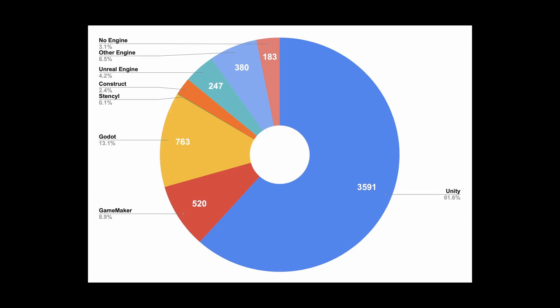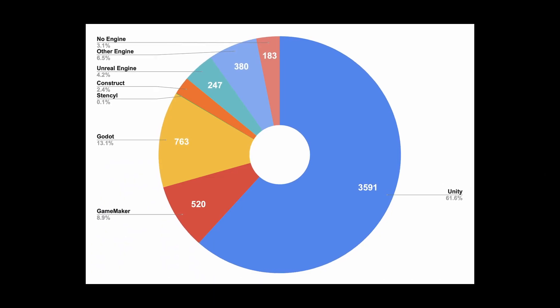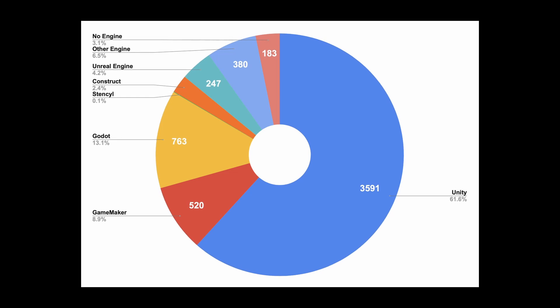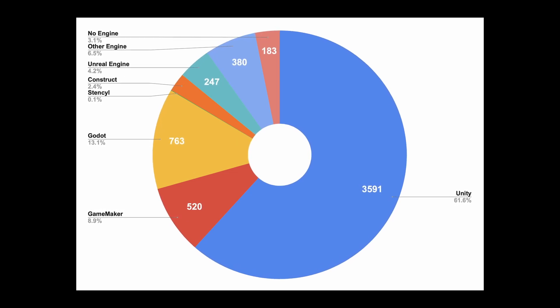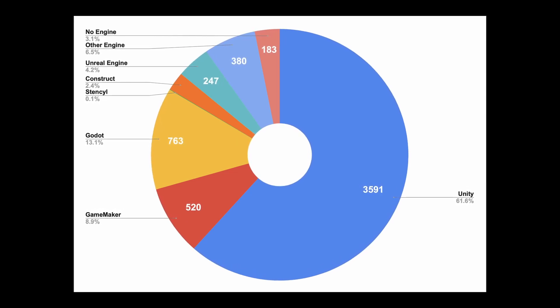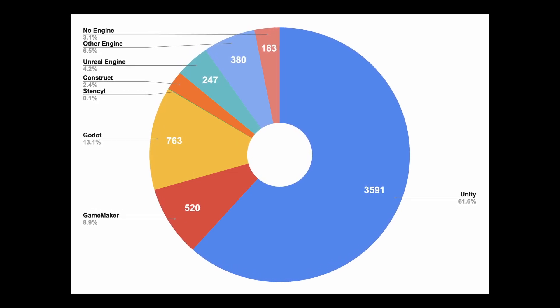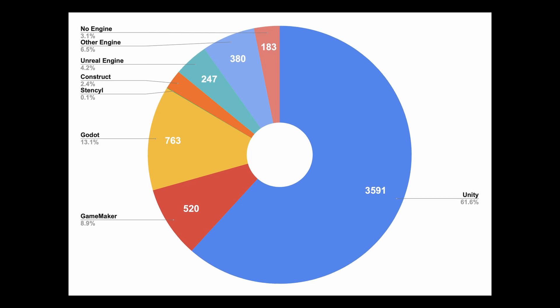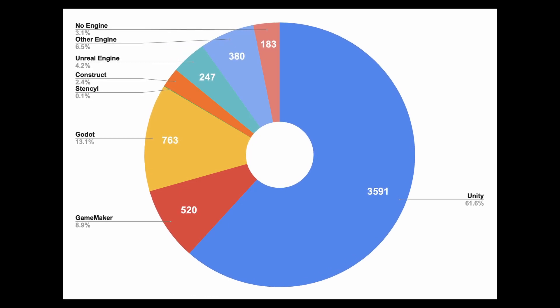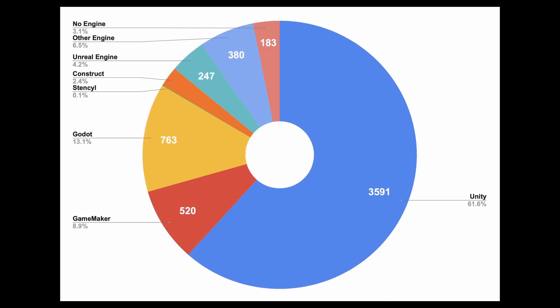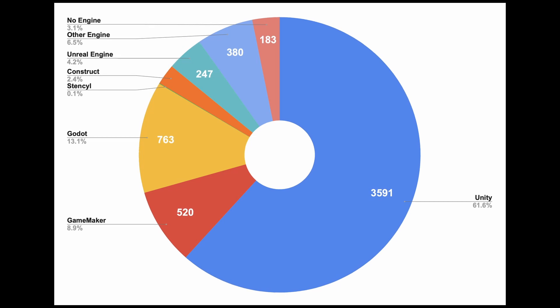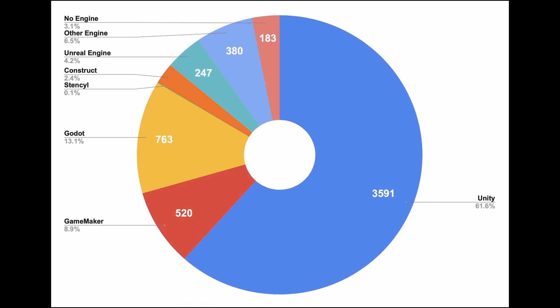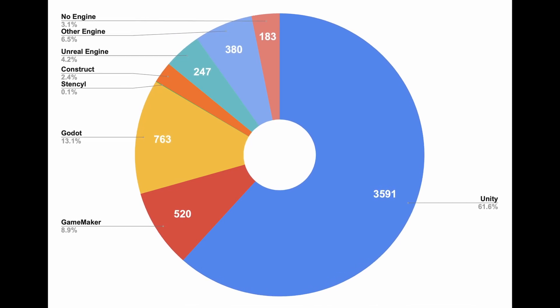The Game Maker's Toolkit Game Jam has ended, and here is the breakdown of the game engines used. Godot is here in yellow at 13.1%, up from 12.2% last year. By this metric, Godot is growing, albeit slowly. I'm really curious to see where Godot will rank next year after the 4.0 release.